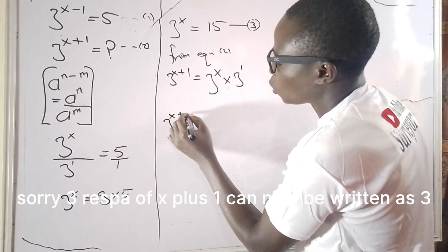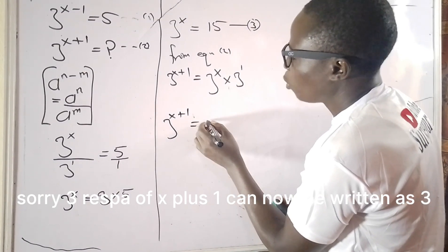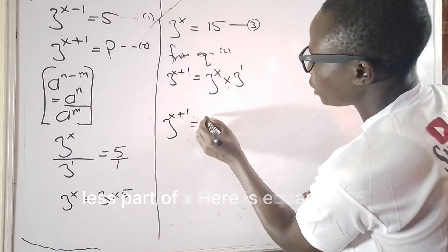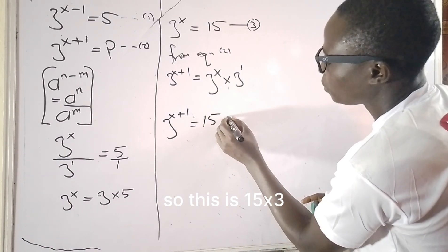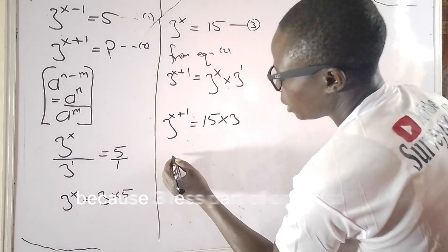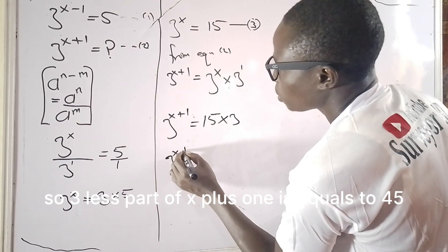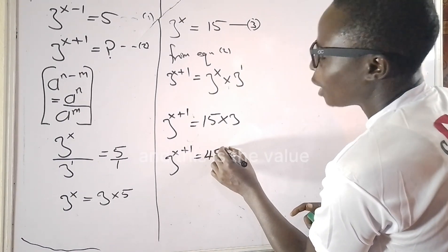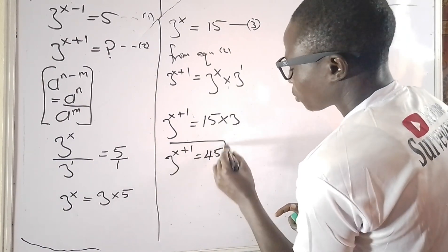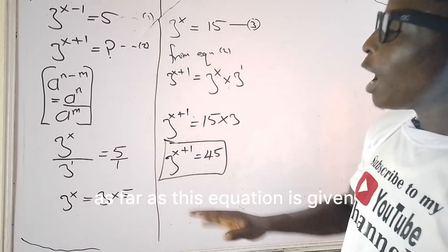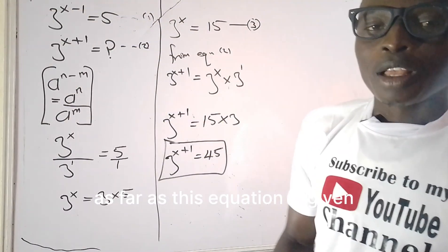So 3 raised power of x plus 1 can now be written as, since 3 raised power of x equals 15, this is 15 times 3 because 3 raised power of 1 is still 3. So 3 raised power of x plus 1 is equal to 45. And this is the value of 3 raised power of x plus 1 as far as this equation is given.